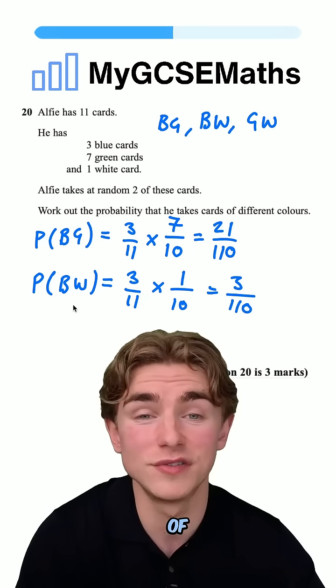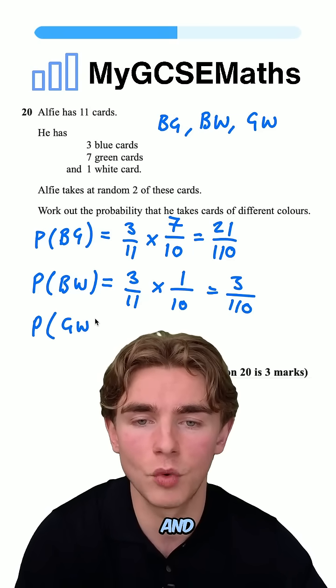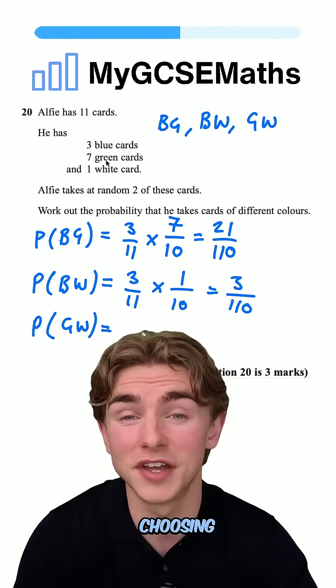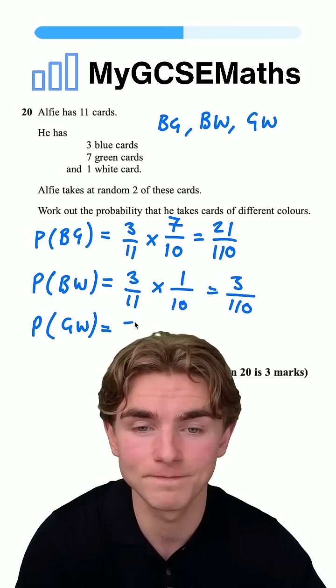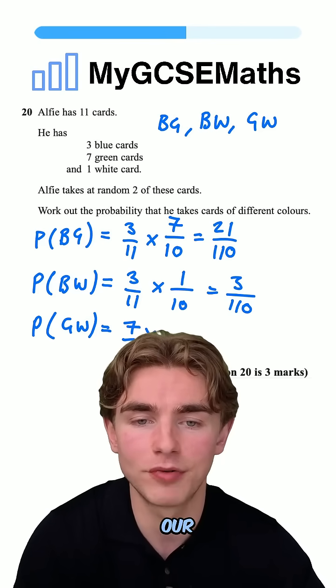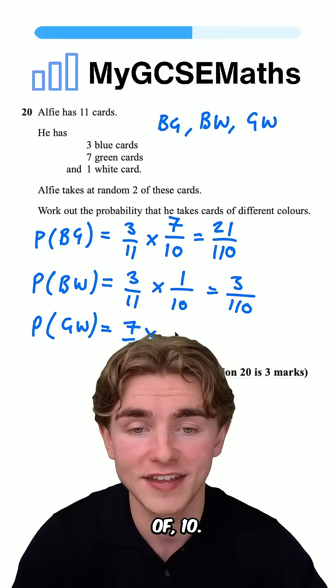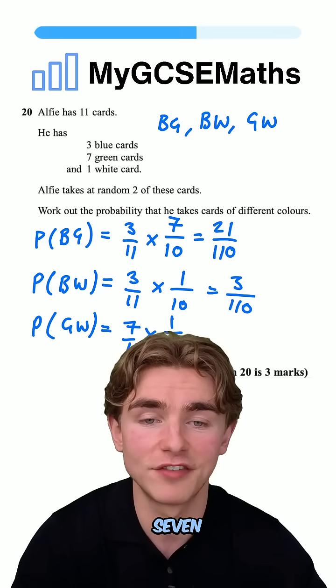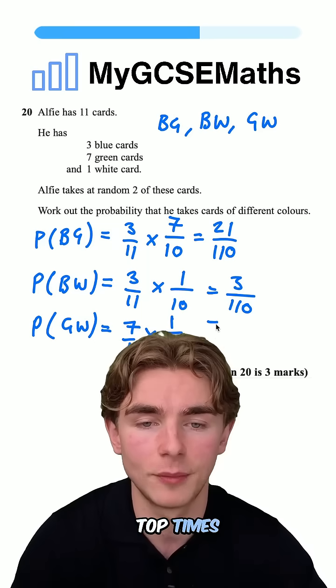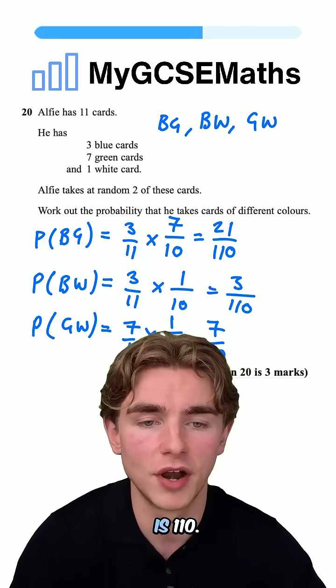And finally, the probability of choosing green and white. The probability of green is 7/11 times the probability of choosing a white on the next one, which is 1/10 for the same reason as before. So 7/11 times 1/10. Top times top is 7, bottom times bottom is 110.